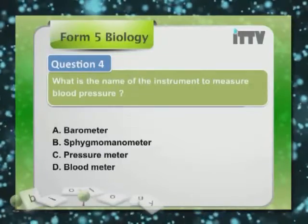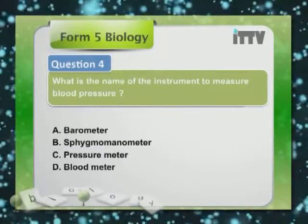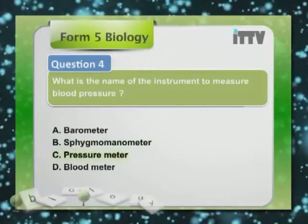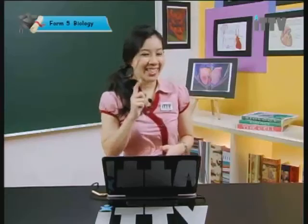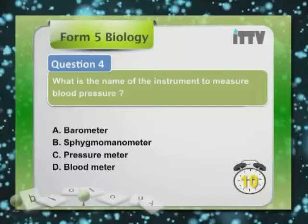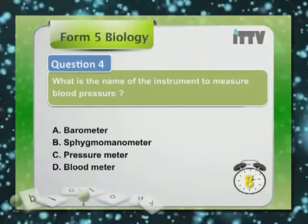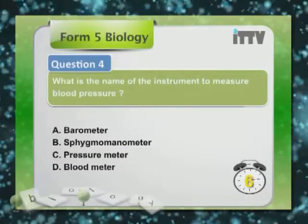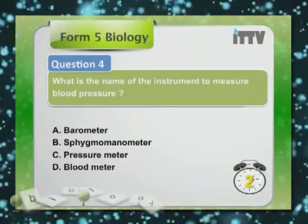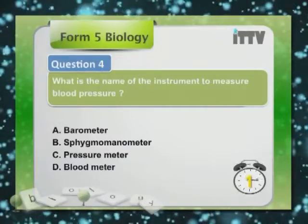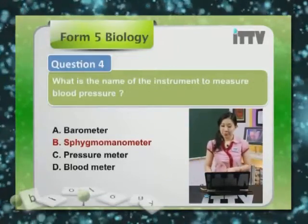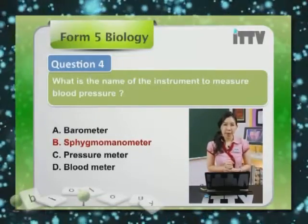Question 4: What is the name of the instrument to measure blood pressure? A. Barometer, B. Sphygmomanometer, C. Pressure meter, D. Blood meter. The answer is B — sphygmomanometer.